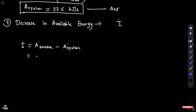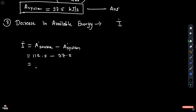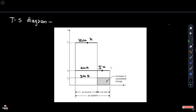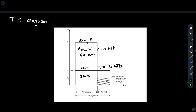The decrease in available energy, I, is equal to A_source minus A_system: 112.5 minus 37.5, so I is equal to 75 kJ per second. To summarize: A_source is equal to 112.5 kJ per second and Q is equal to 150 kJ per second.